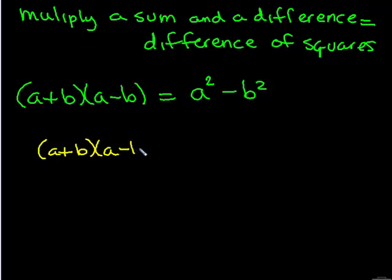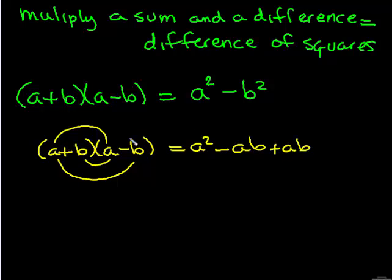The reason that works is because if I FOIL that out, first gives me a squared, outside gives me minus ab, inside gives me plus ab, and last gives me minus b squared. A negative ab and a positive ab cancels each other out. So I'm left with a squared minus b squared. And this holds true, so anytime you have the same first terms and the same second terms with a plus and a minus, you square the first and square the second and put a minus in between them.